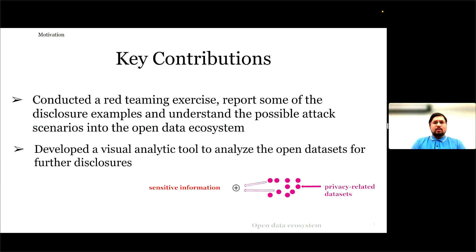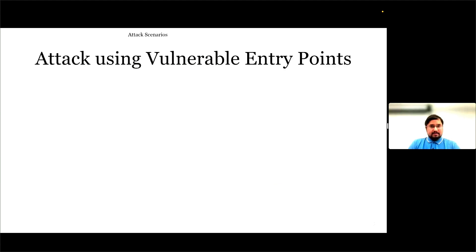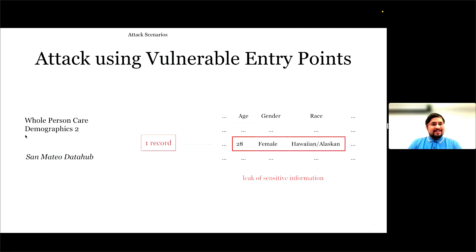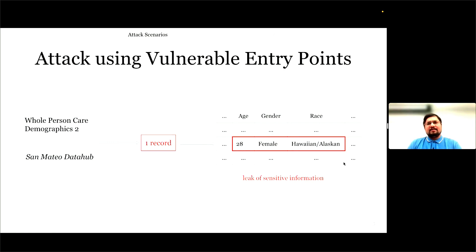Let's see some more examples observed during our red-team exercise. First, we tried to find whether there are any vulnerable entry points into the open data ecosystem. We found that this dataset from the San Mateo Data Hub portal has only one record for an individual with attributes like age 28, female, Hawaiian. If this is joined with another individual record-level dataset, an attacker can leak sensitive information about this individual.